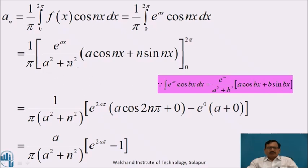Taking (a²+n²) outside: aₙ = 1/[π(a²+n²)] · { e^(2aπ) · [a cos 2nπ + n sin 2nπ] − e^0 · [a cos 0 + n sin 0] }. Since sin 2nπ = 0, cos 2nπ = 1, sin 0 = 0, cos 0 = 1, this simplifies to aₙ = a(e^(2aπ) − 1) / [π(a²+n²)].